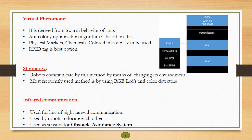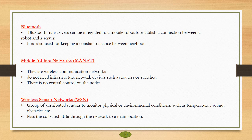Another communication used is infrared communication. It is actually a line of sight communication which is mainly used for locating the robots with each other. Bluetooth transceivers are integrated to mobile robots for establishing a connection between a robot and a server. It is actually used for keeping a constant distance between two neighboring robots.